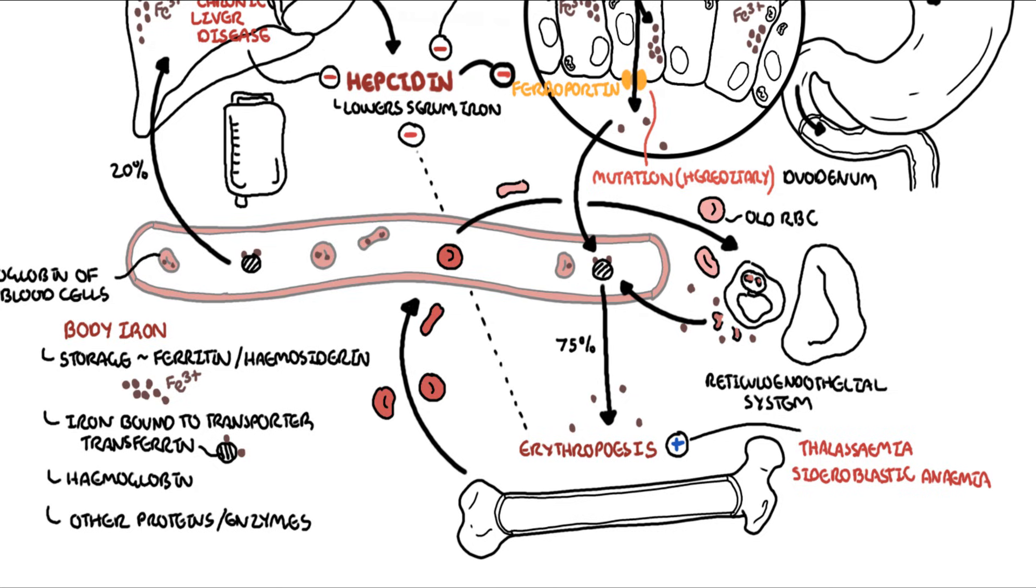Another cause of iron overload includes transfusional overload. What I mean by this is iron transfusions for a person or red blood cell transfusions, such as for those who have thalassemia or myelodysplastic syndrome or aplastic anemia. When you give someone red blood cells, they also contain iron, and because they contain iron, you can cause secondary iron overload.